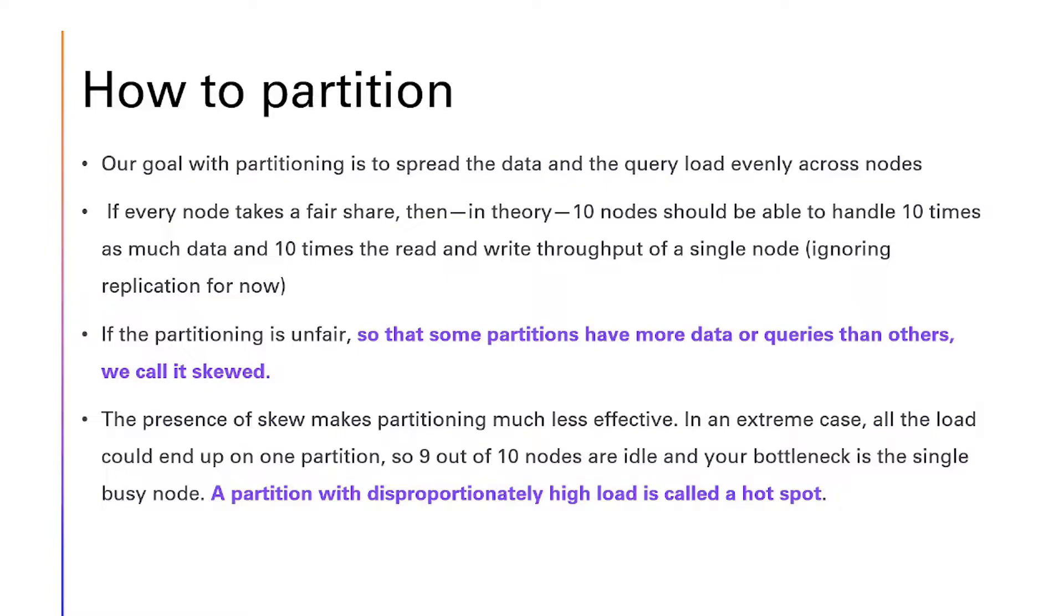If the partitioning is unfair, so that some partitions have more data query than others, we call it skewed. The presence of skew makes partitioning much less effective. In an extreme case, all the load could end up on one partition. So 9 out of 10 nodes are idle and your bottleneck is a single busy node. A partition with disproportionately high load is called a hotspot.